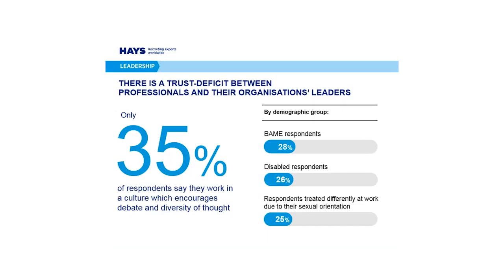Turning to leadership, a distinct feature of this shortfall often starts at the top of an organization. Our survey showed that there is a trust deficit between professionals and their organization's leaders. In fact, only 35% of survey respondents stated that they trusted their organization's leaders to deliver change on the diversity and inclusion agenda.